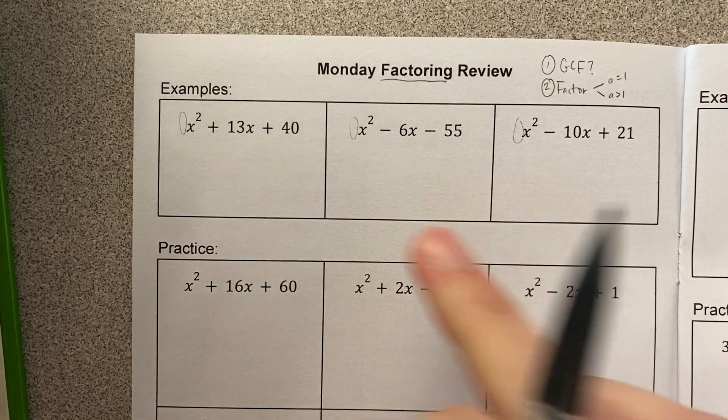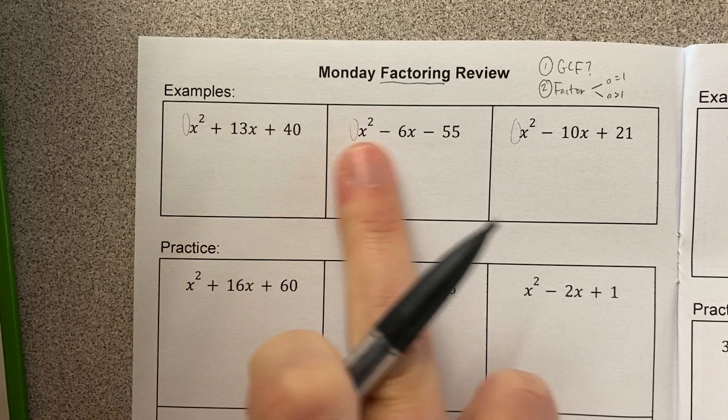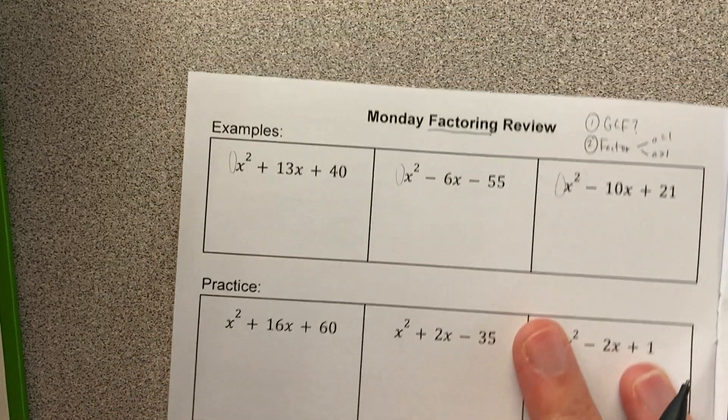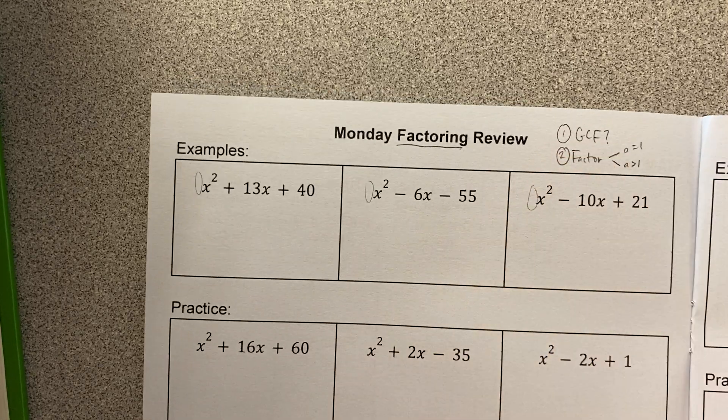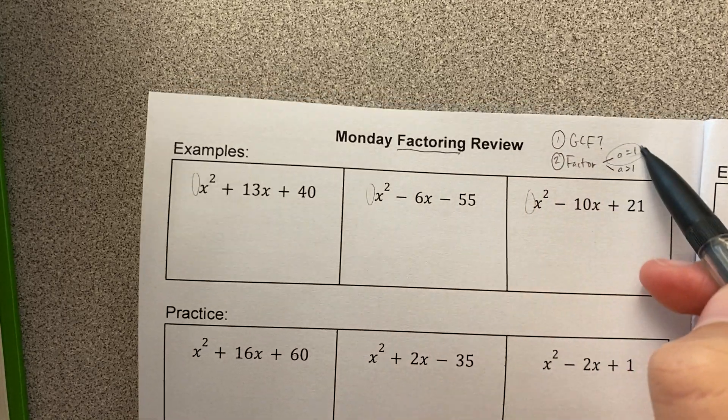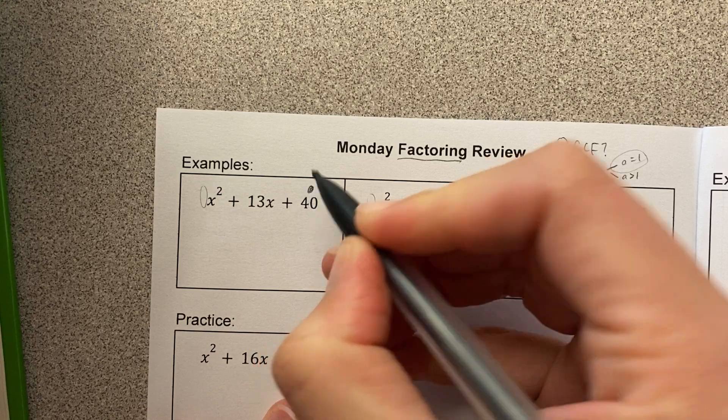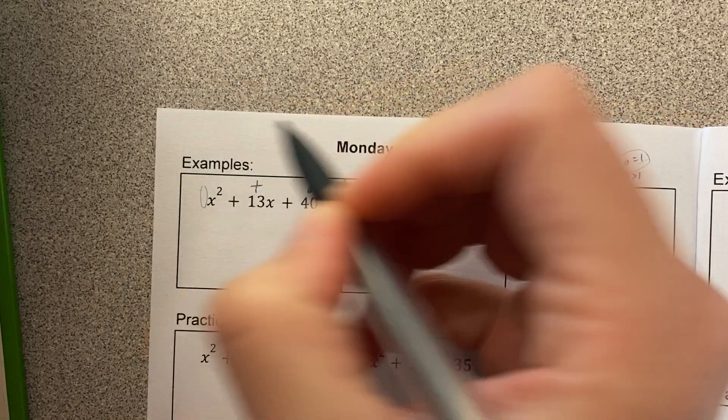But in this case, what I want you to observe is that every single one of these problems all the way through has an x² out in front. And so we have no GCFs on this page and we are all just factoring with A equals 1, which means I need two numbers that multiply to this and add to this. And if you remember, let's do this one and then we'll multiply so we can remember why this works.